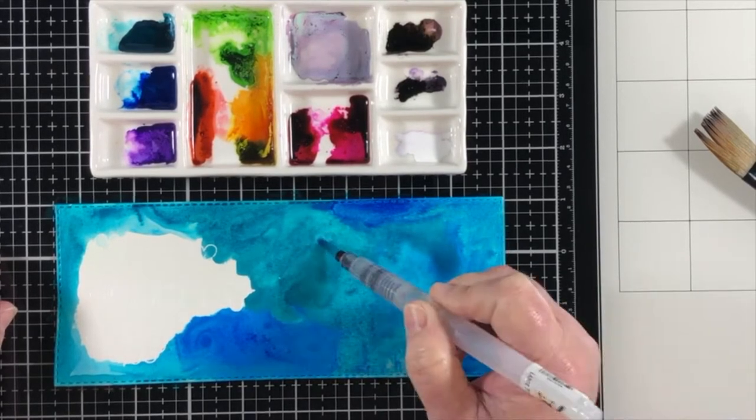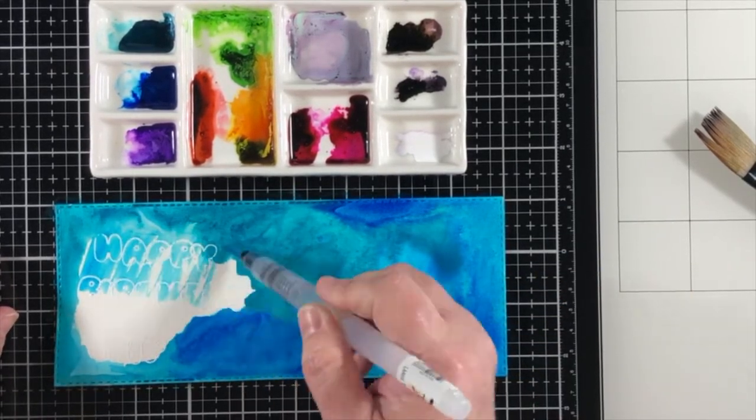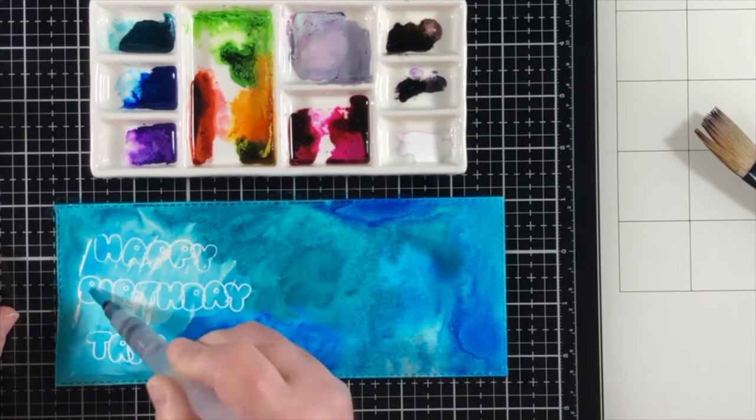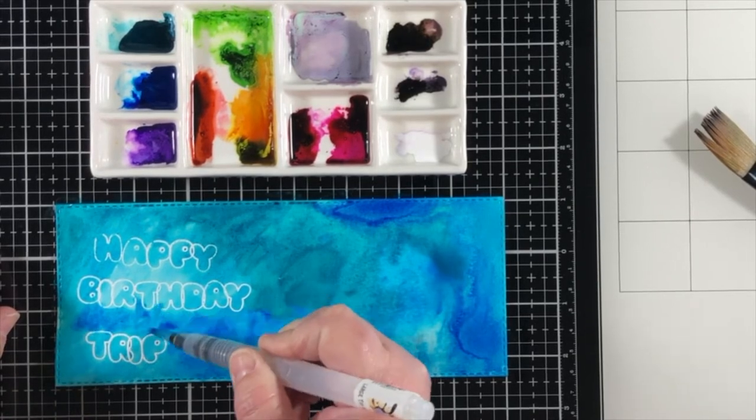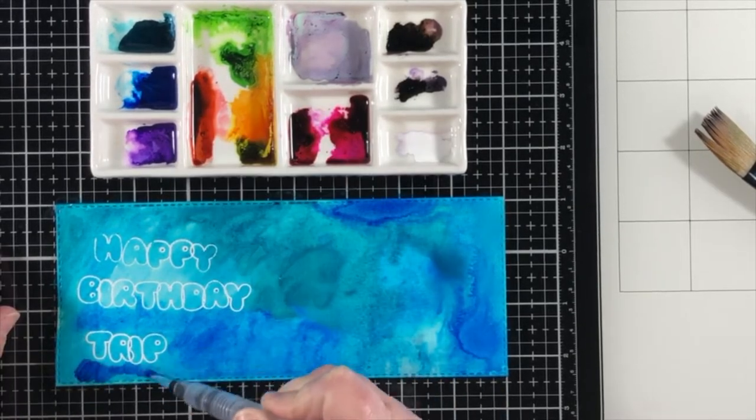And I'm staying away from the embossed letters until I get some color on all the rest of the paper. Because that first layer of color, and this is ink refills from InkOn3, but that first layer of color is going to get absorbed into the paper. And that's what's really going to stick in the end.